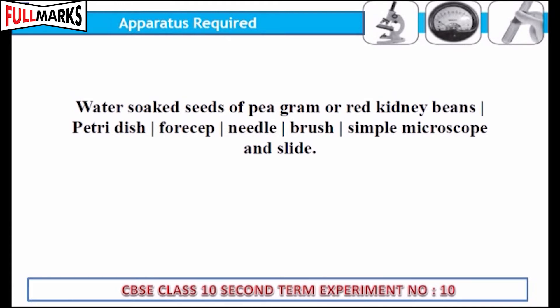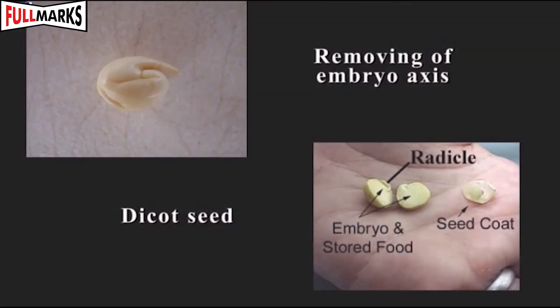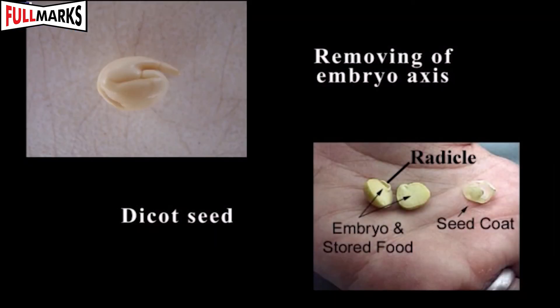You will also need a petri dish, forceps, a needle, a brush, a simple microscope, and a slide. Procedure: Take 8 to 10 soaked seeds of pea, gram, or red kidney beans. With the help of forceps, slowly remove the seed coat and study the different parts of the seed embryo.